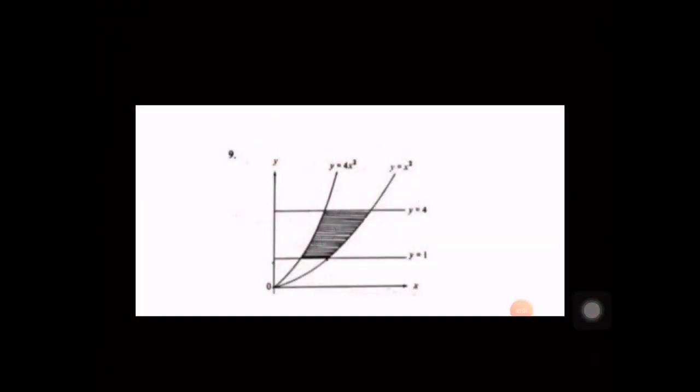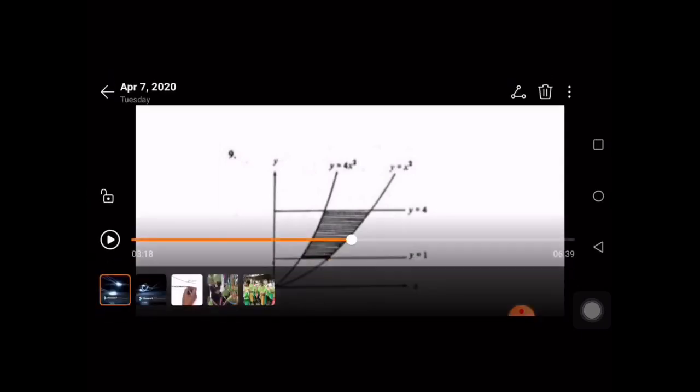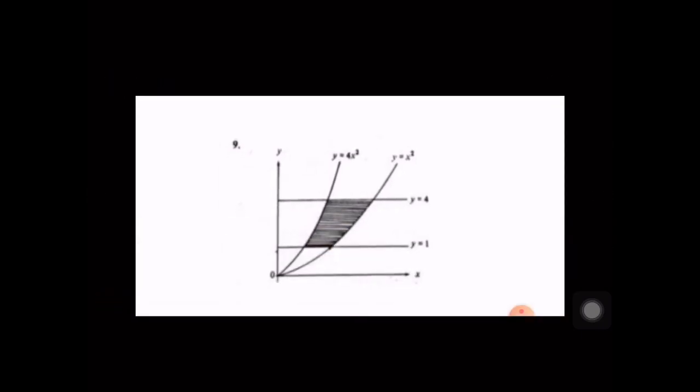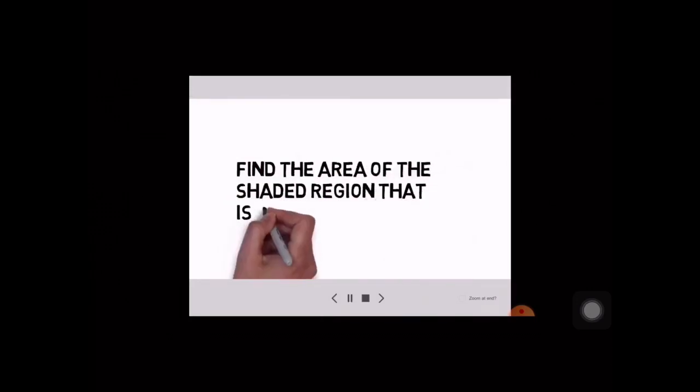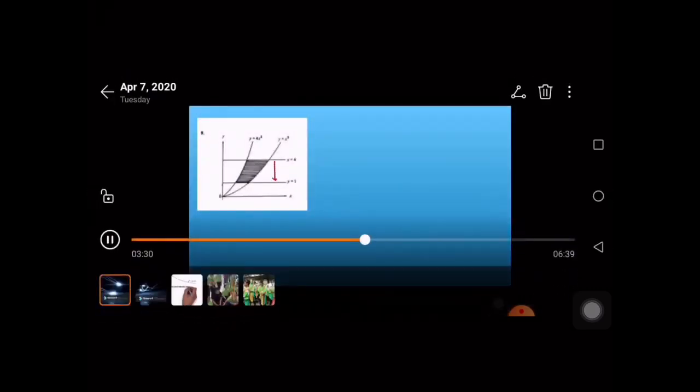Next. Kita tengok dulu gambar ajar yang dia dah bagi. Then, tengok soalan dia. Find the area of the shaded region that is shown in the diagram. Apa yang kita kena buat? First, kita kena cari area yang besar untuk tolak area yang kecil.